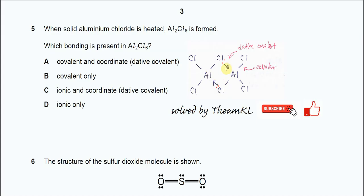So this one has two dative bonds and of course the rest are all normal covalent bonds. Therefore we know that in this Al2Cl6 it has covalent bonds and coordinate or dative covalent bonds. Therefore the answer is A.